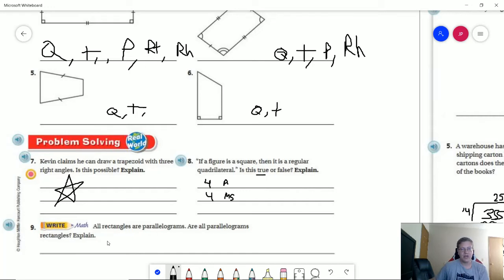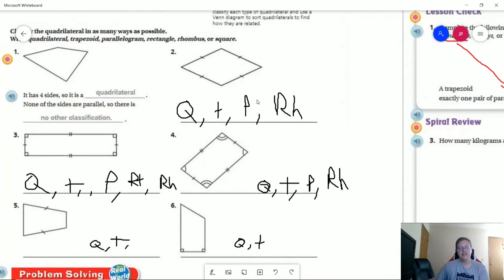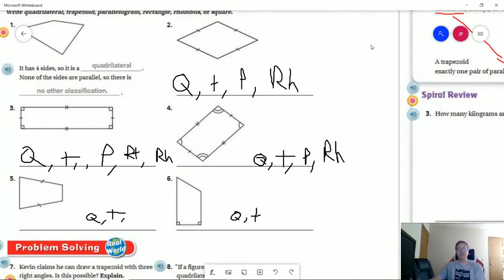Number nine all rectangles are parallelograms. Are all parallelograms rectangles? Well no because we can go back up here and see two different parallelograms we have two matching pairs of parallel sides but we don't have 90 degree angles. So that eliminates that from being a rectangle.